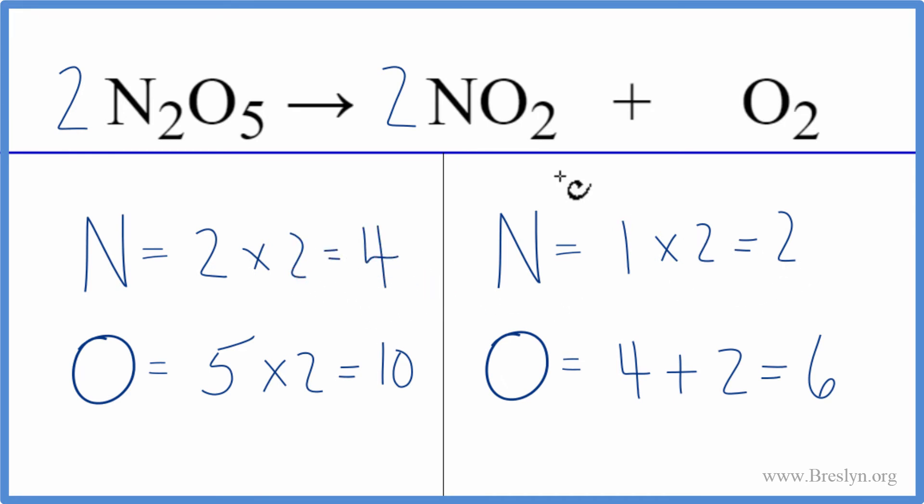Looks like we should maybe change this coefficient here so that we get four nitrogens. So I put a coefficient of four in front of the NO2. And let's update this. Now I have one times four. I have four nitrogen atoms. And I need to update my oxygens again.